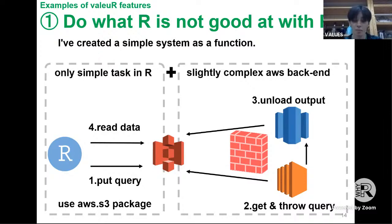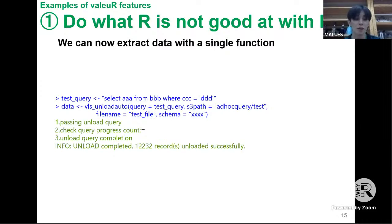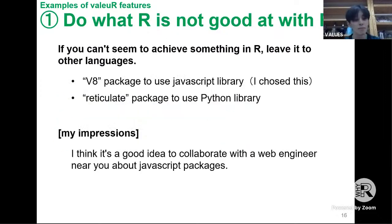EC2 or Lambda on AWS executes the query and puts the results in S3. Previously data was extracted through several separate steps, but now it is possible to extract data from RStudio with a single function. By linking R with other services such as AWS you can realize powerful functions that cannot be achieved with R alone. Connecting to AWS was very easy using the aws.s3 R package.